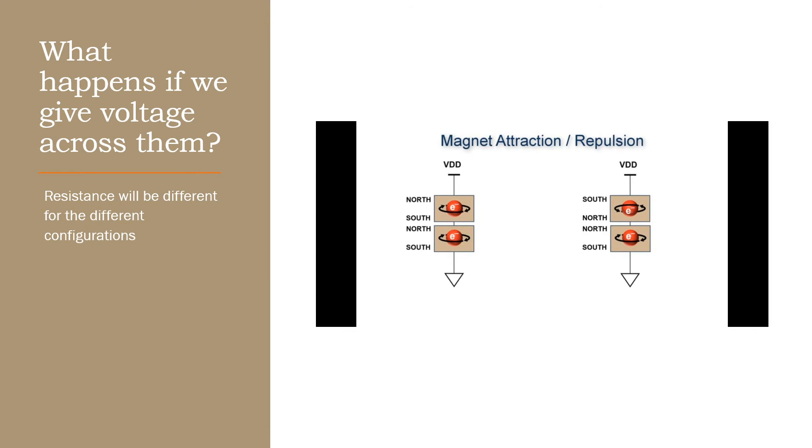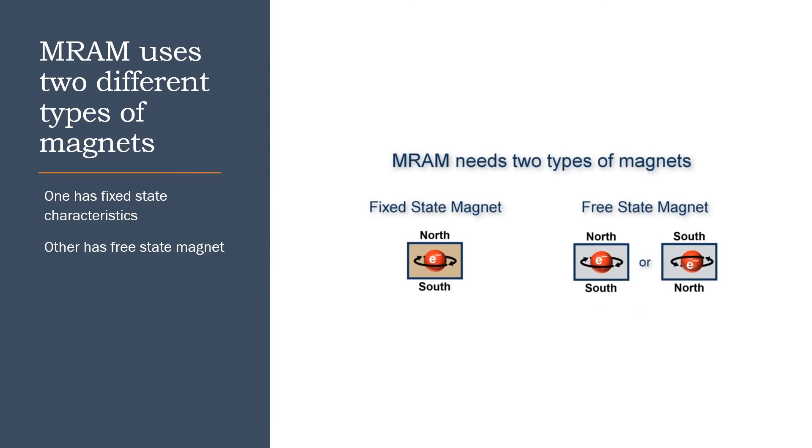So this is the basic working principle of an MRAM which we'll see later. MRAM actually uses two types of magnets: one being the fixed state magnet and another being the free state magnet. Fixed state magnet implies that orientation or the spin of the electron is fixed. You can't change that. The free state magnet can be changed from clockwise to anti-clockwise or anti-clockwise to clockwise using currents.